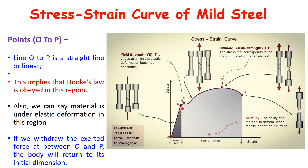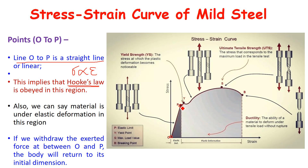From O point to P point, if you look at this curve, the line O to P is a straight line, which is also called a linear line. This implies that from O point to P point, the material obeys Hooke's law. Hooke's law states that stress is directly proportional to strain, so the variation of stress and strain is linear. In other words, from O point to P point, the material is under elastic deformation.